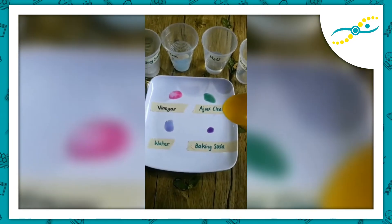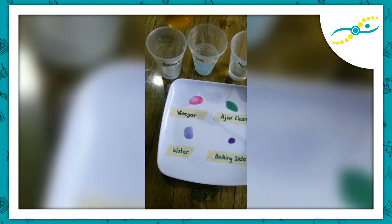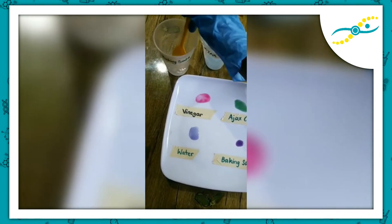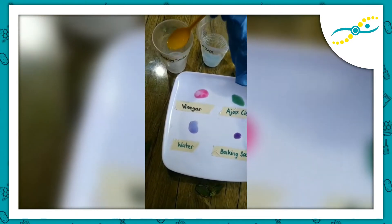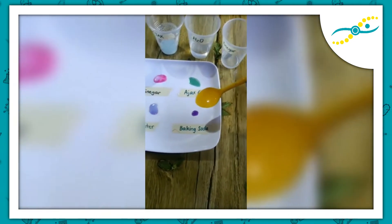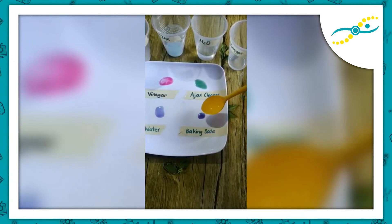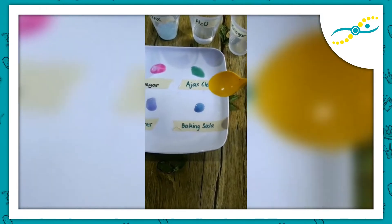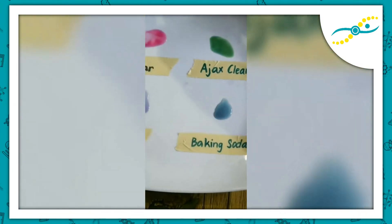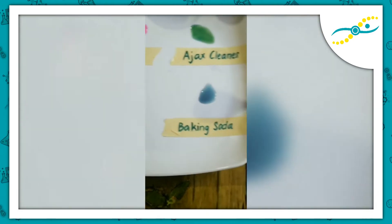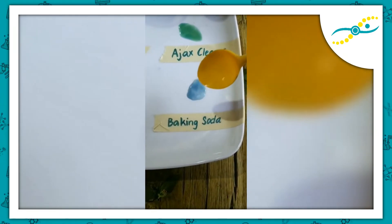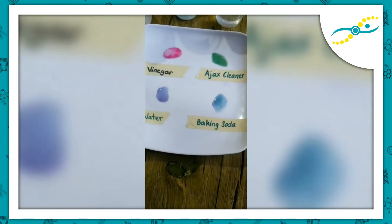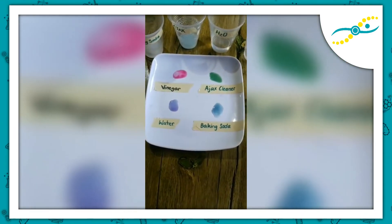Our final sample is baking soda. We'll just swirl it and then collect our sample of baking soda. We see a blue-green color change — adding some more, we see a blue color change. And that's it for the liquid indicator test.